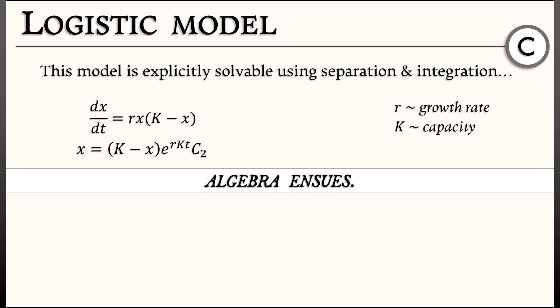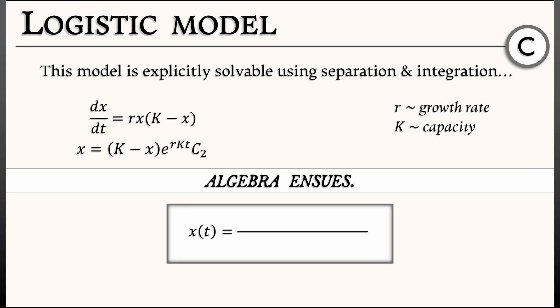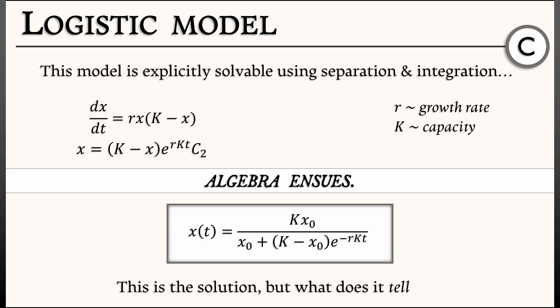We still have to solve for x, and that involves a bunch of algebra. Assuming someone has done that algebra, the final explicit solution is: x(t) equals k times x0 divided by x0 plus (k minus x0) times e to the minus rkt, where x0 is the initial condition — what you get when you plug in t equals 0.